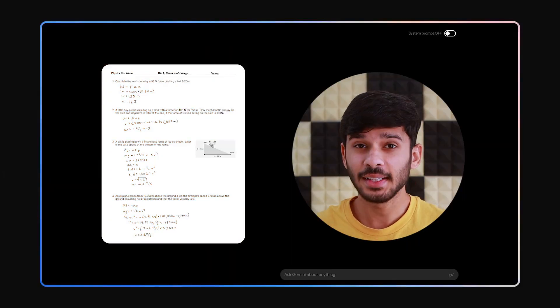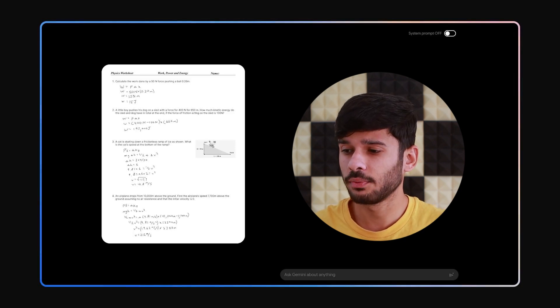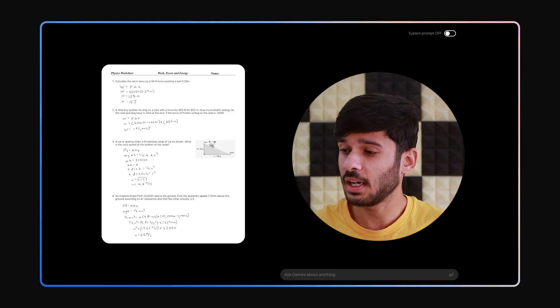So here are some examples Google shared. In this example they gave a math problem worksheet and the problems are already solved with handwriting, and Gemini is asked to check the answer. It can read the answers and understand what was right and what was wrong and explain the concepts that need more clarification.